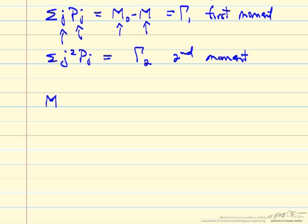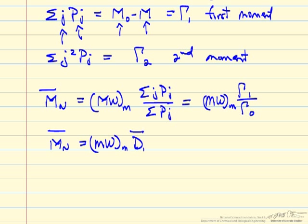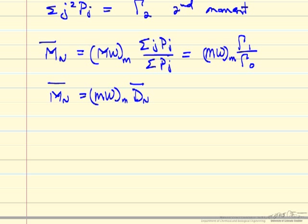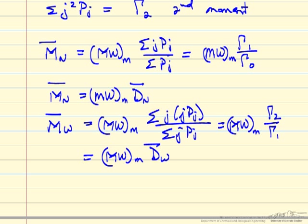Now we can calculate the average molecular weight, and there are two types. The number-average molecular weight is the molecular weight of the monomer times a weighted average normalized — that is, molecular weight of the monomer times γ₁ over γ₀. This is also written as the molecular weight of the monomer times the number degree of polymerization. We also have the weight-average molecular weight, which is very different because larger polymers contribute much more to this average. It's calculated as the molecular weight of the monomer times γ₂ over γ₁ — the second moment over the first moment — also called the weight degree of polymerization.